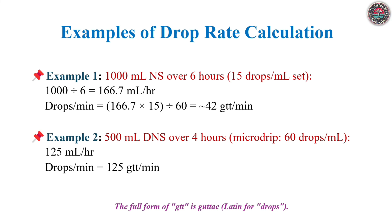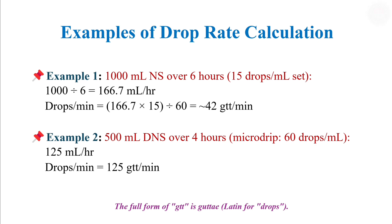First example: a physician orders 1,000 ml of normal saline over 6 hours using a macro drip set with 15 drops per ml. Step 1: convert hours to minutes — 6 hours × 60 equals 360 minutes. Step 2: calculate ml per hour — 1,000 ml ÷ 6 equals 166.7 ml/hour. Step 3: apply the formula — 166.7 ml × 15 drops/ml ÷ 60 minutes equals 42 drops per minute.